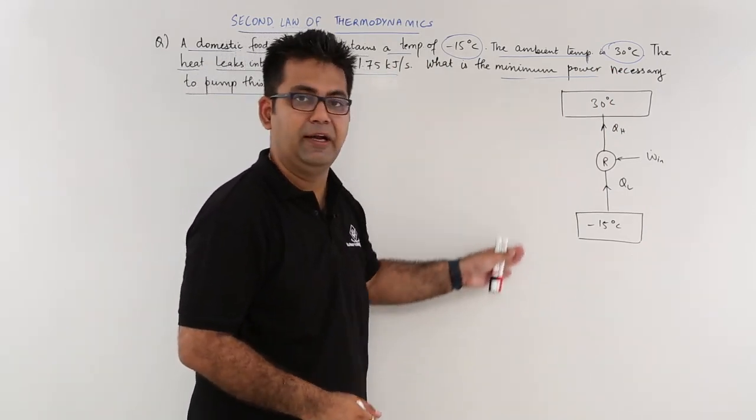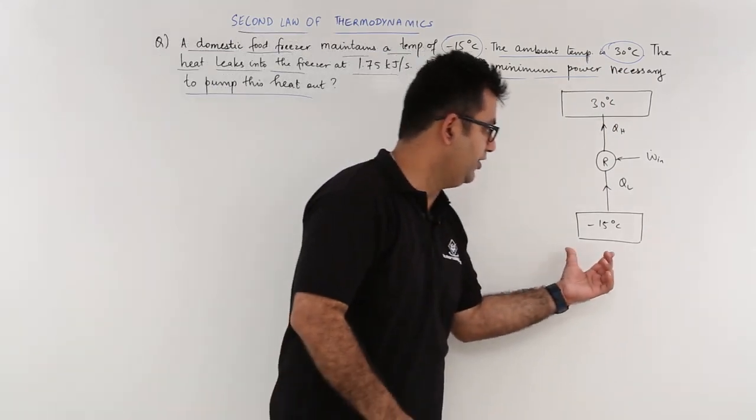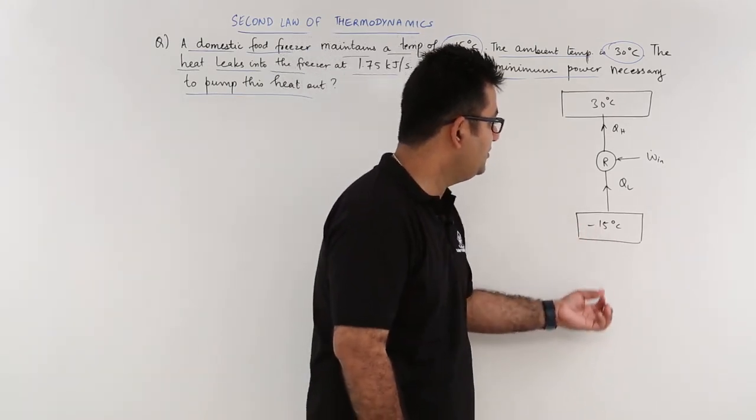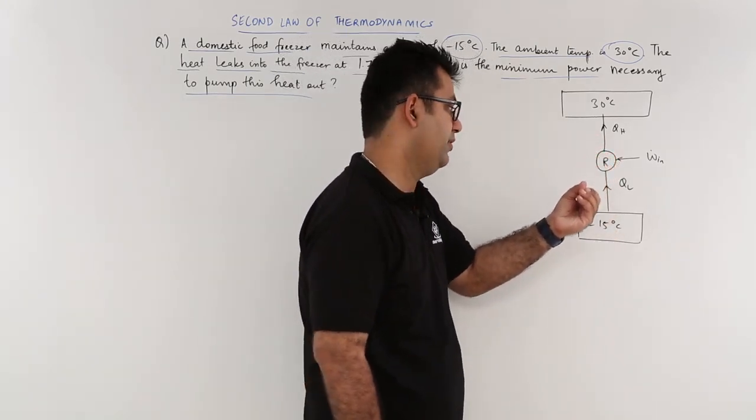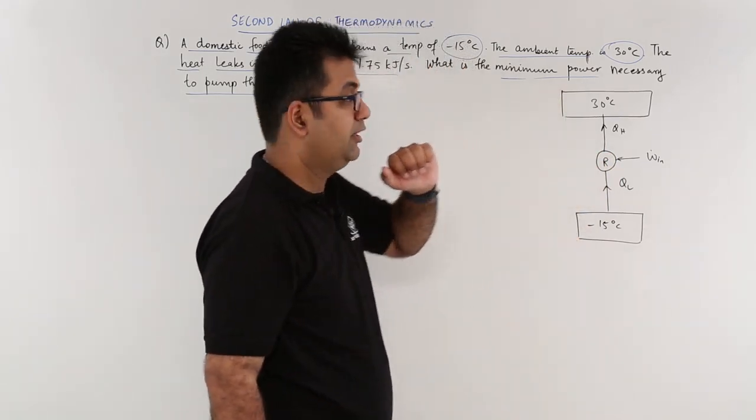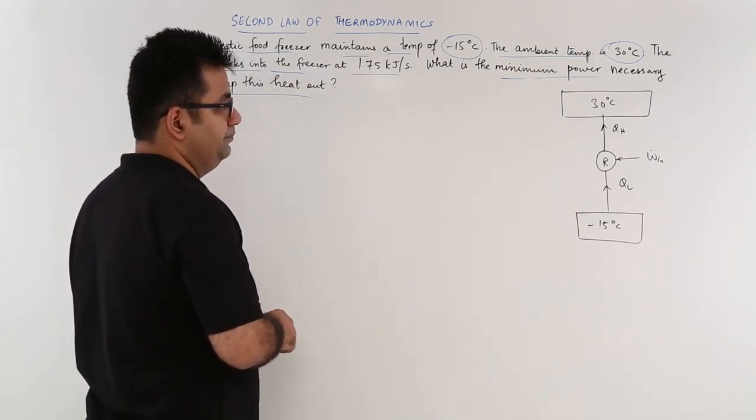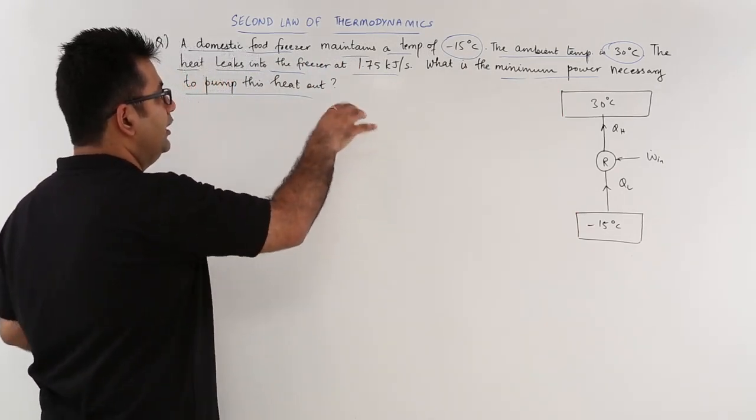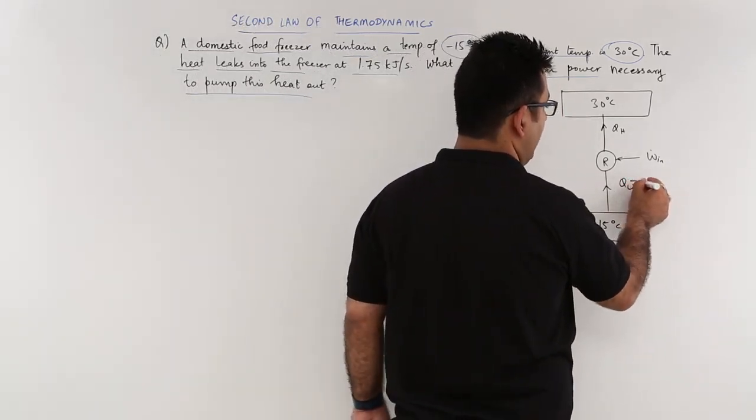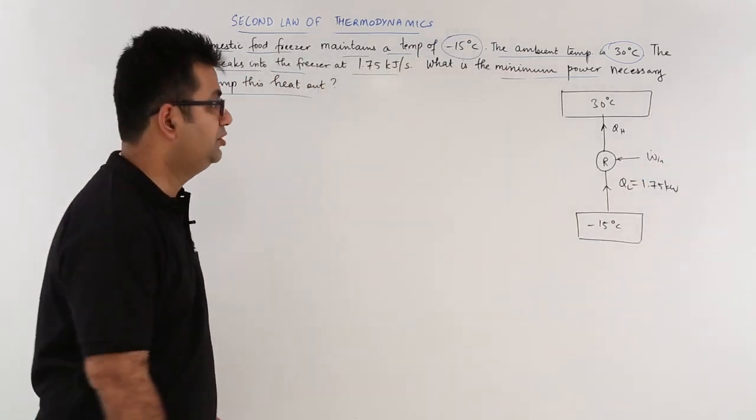So this is the schematic for this freezer. This is the freezer at which you have to maintain minus 15 degrees Celsius. It absorbs heat from this minus 15 degree Celsius space. It throws heat into 30 degree Celsius ambient space. Now the heat that is leaking is 1.75, so that is QL, 1.75 kilowatts.